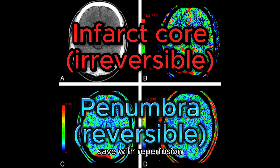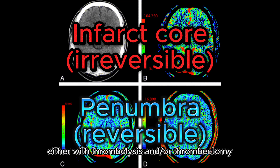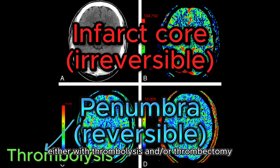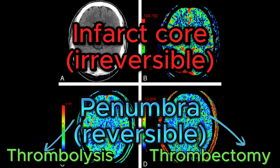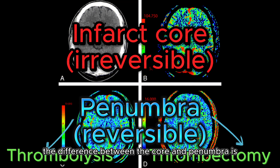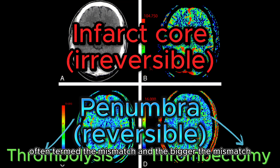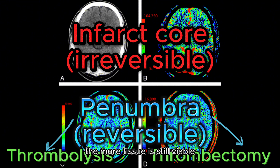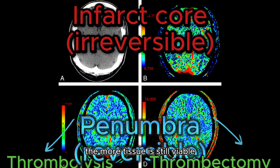Saving the penumbra is achieved with reperfusion, either with thrombolysis and/or thrombectomy. The difference between the core and penumbra is often termed the mismatch, and the bigger the mismatch the more tissue is still viable.